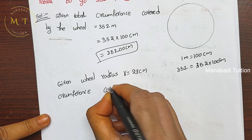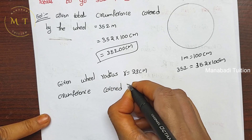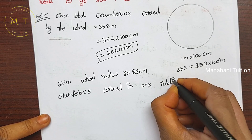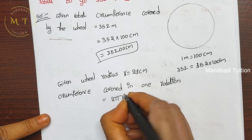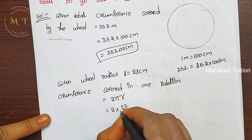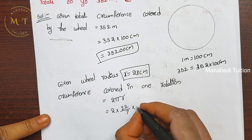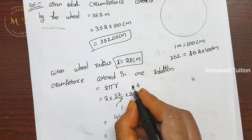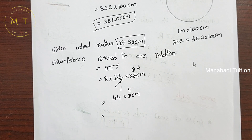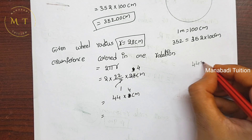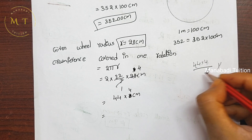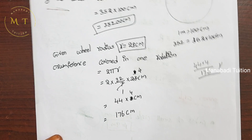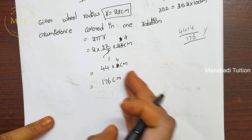Circumference covered in one rotation equals 2πr, using pi value 22/7. So 2 into 22/7 into 28. Since 7 fours are 28, we cancel 28 with 7 to get 4. Then 2 into 22 is 44. So 44 into 4 is 176 centimeters. One rotation covers 176 centimeters.